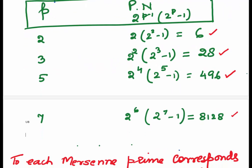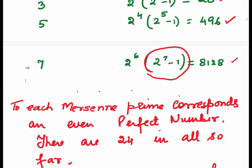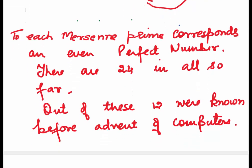For those who don't remember what perfect numbers are, numbers are called perfect numbers if the sum of their divisors is equal to the number itself. Here you can see that this formula gives us the perfect numbers and our Mersenne primes are involved in this. To each Mersenne prime corresponds an even perfect number. There are 24 in all so far.